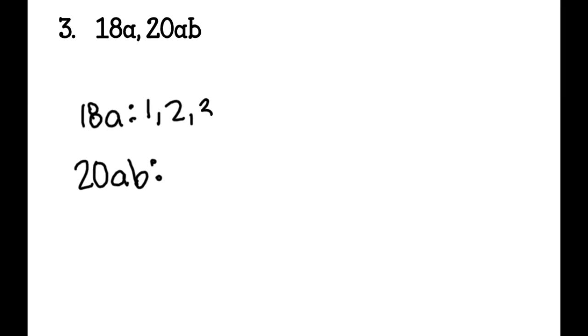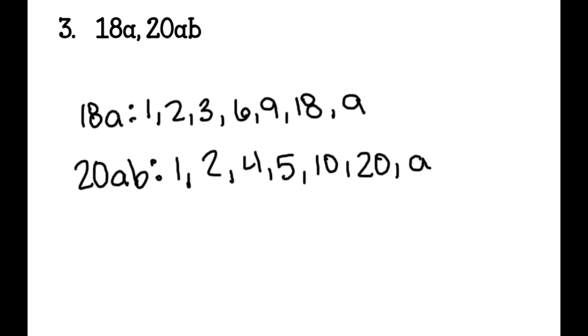So I have one, two, three, six, nine, and eighteen. And then I also have an a because that's multiplied in there to get that 18a. Then I have 20ab. I'm going to have one, two, four, five, ten, twenty. And then I also have an a and I also have a b. So then I go through and I highlight what's my greatest common factor. My greatest common factor, I have a two and that's it. So numerically, my greatest common factor is a two. And then I also have variables in common, which is the a. So my GCF of this is 2a. So my greatest common factor is 2a.